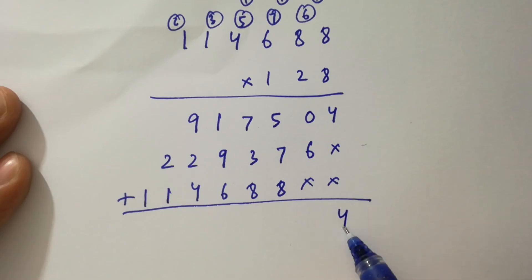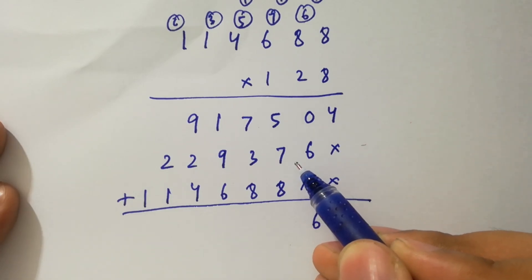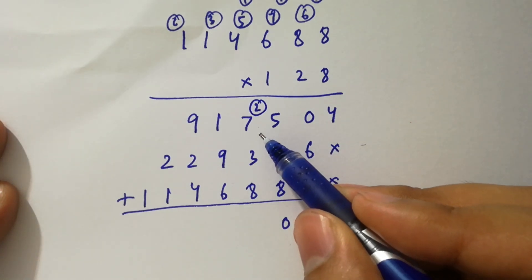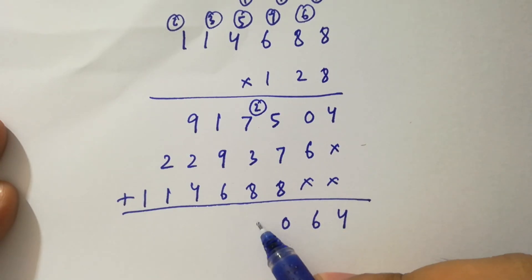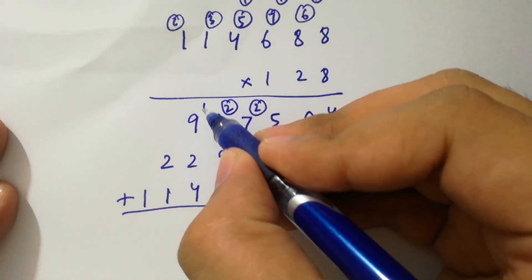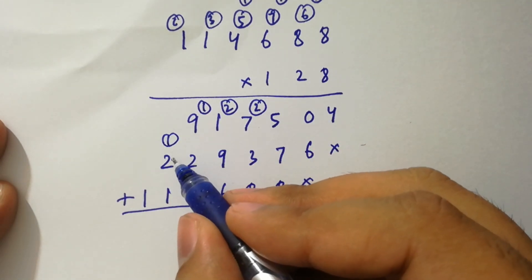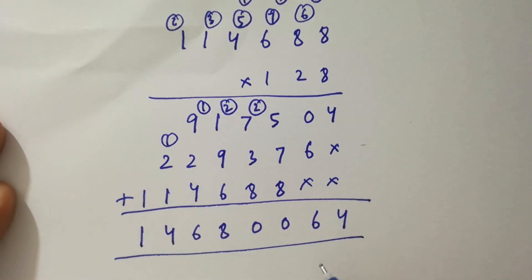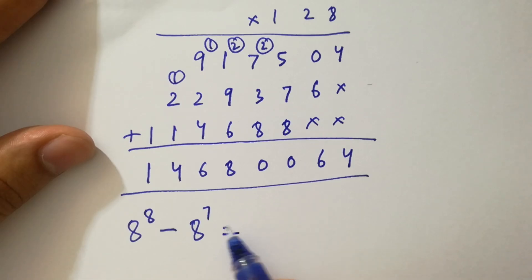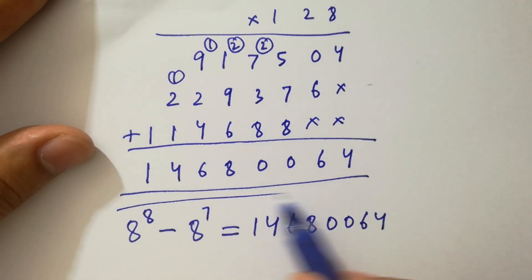Adding the partial products together, carrying through each column: we get 4, then 0, then 0, then 8, then 6, then 4, then 1. So finally, 8 to the power 8 minus 8 to the power 7 equals 14,680,064, which is our final answer.